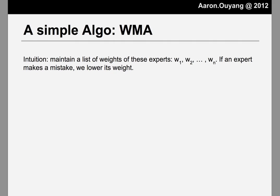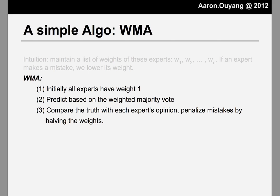Here comes an interesting algorithm called the weighted majority algorithm. The intuition is that we maintain a list of weights on each expert. If an expert makes a mistake, we lower their weight. And if they make a lot of mistakes, their opinion should not be taken seriously afterwards. Initially, all experts have the same weight, which is exactly one. We predict based on the weighted majority vote — we sum up the weight for each answer, and whichever has the higher value is output as the final prediction. We also compare the truth with each expert's opinion and penalize those who make a mistake by halving their weight.